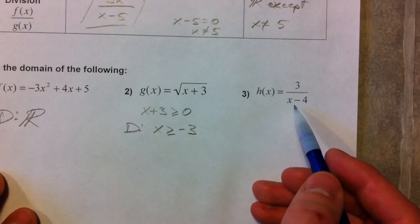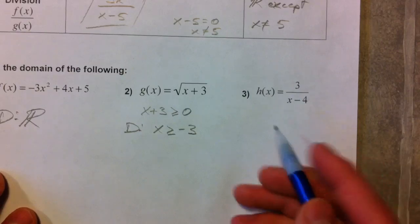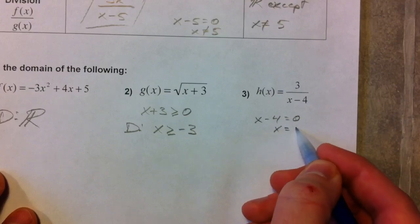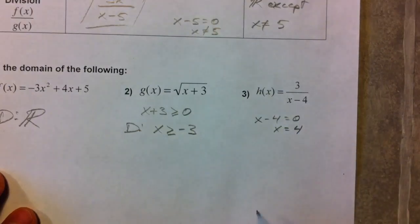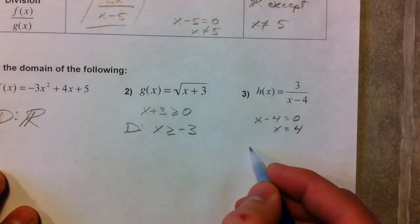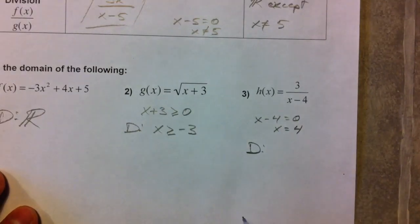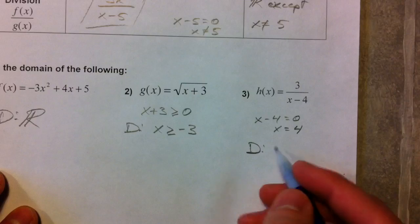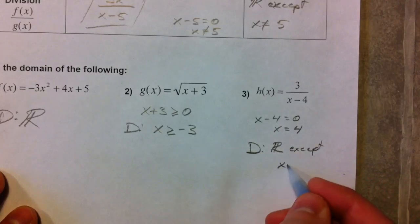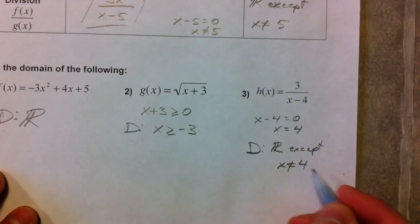And then x minus 4 is on the bottom. Can't divide by 0. x minus 4, set it equal to 0, solve, add the 4 to the other side, you get x equals 4. And so the domain is all real numbers except x cannot equal 4, because that causes us to divide by 0.